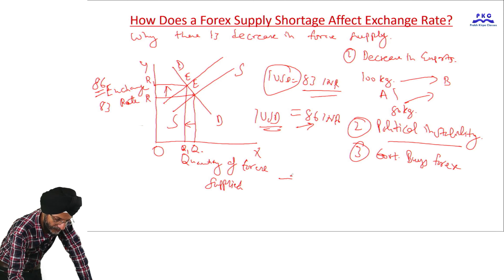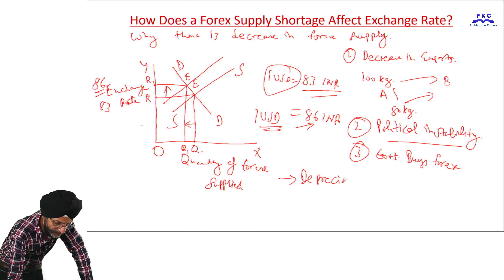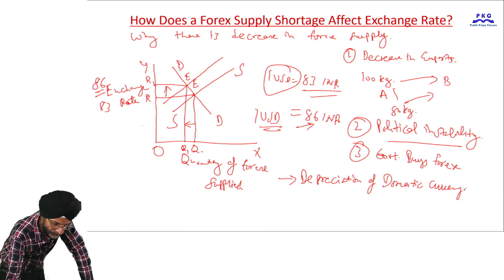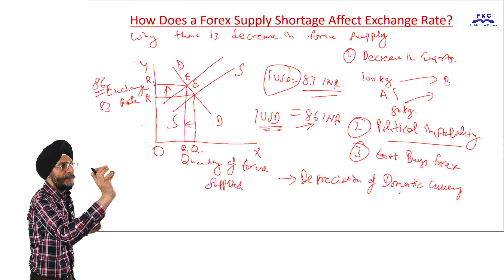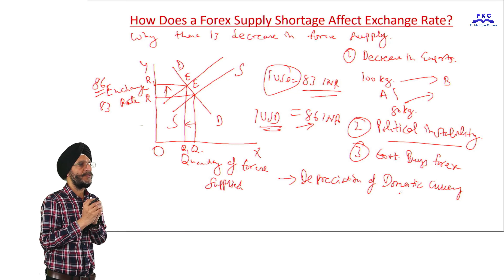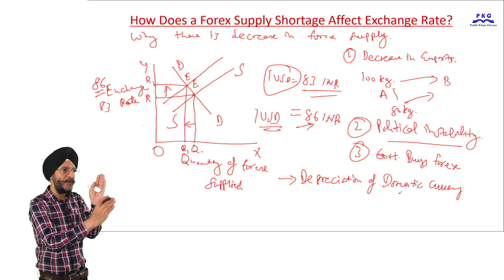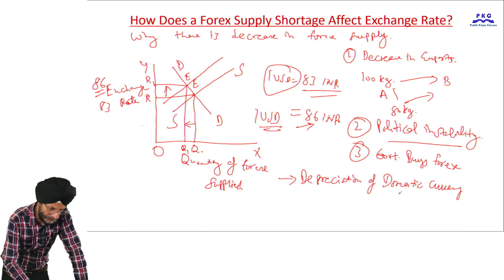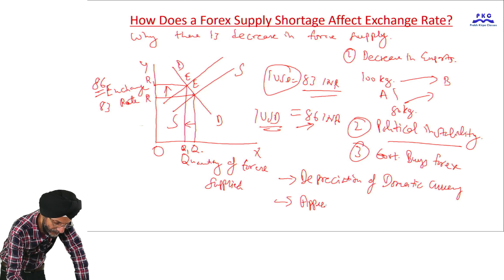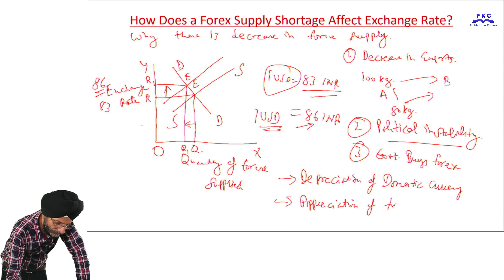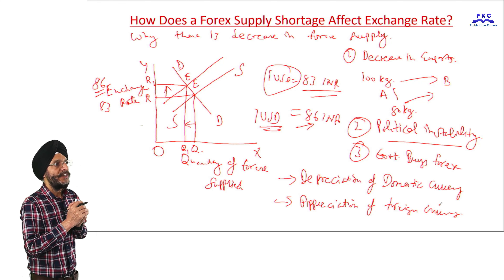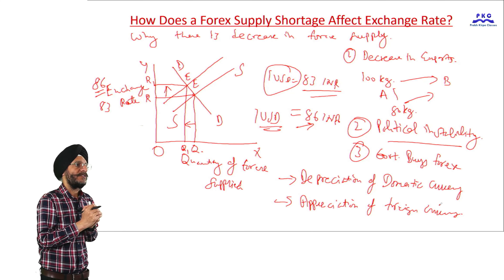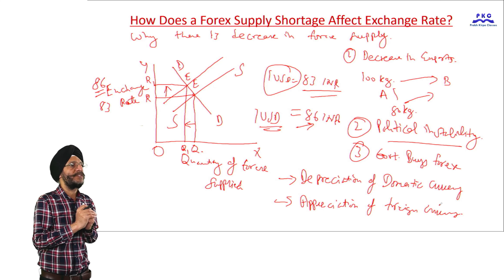This means there is depreciation of the domestic currency. Earlier we were getting 1 US dollar for only 83 rupees, but now as the supply of foreign currency has reduced, we are getting 1 US dollar for 86 rupees. It also means there is appreciation of foreign currency — earlier, residents of the USA were getting 83 Indian rupees for 1 US dollar, but now they are getting 86 rupees for 1 US dollar.